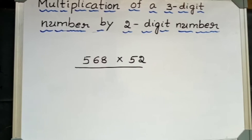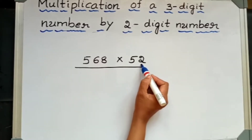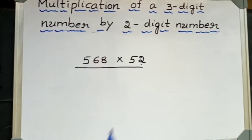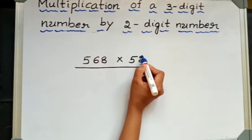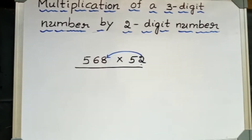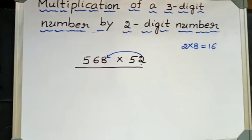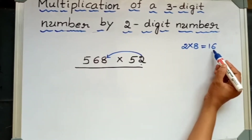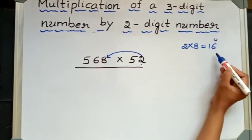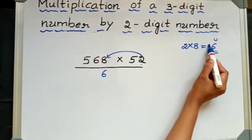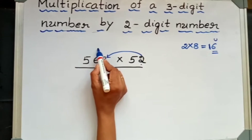Now, in this number, 2 is in the unit place. So from this 2, I have to multiply this number first, that is 568. First, let me multiply 2 into 8. Two into eight is 16. Now, 6 is in the unit place, so I will write here 6. Then this 1, I will write it as carryover.